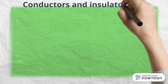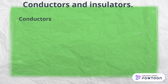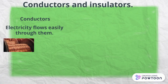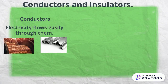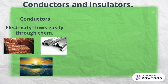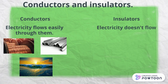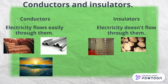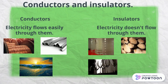Conductors and insulators. Conductors are materials in which electricity flows easily through them. For example, copper, steel and seawater. And insulators are the opposite. Electricity doesn't flow through them. For example, plastic, wood and glass.